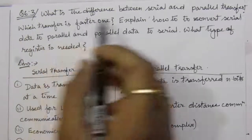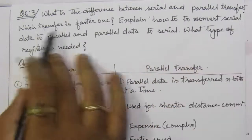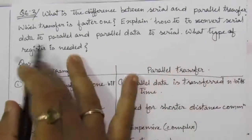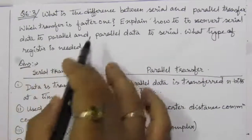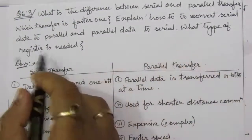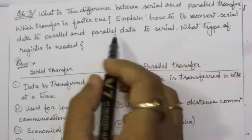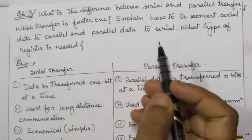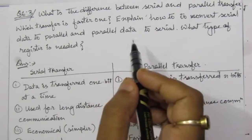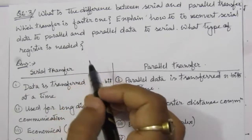The problem is: what is the difference between serial and parallel transfer? Which transfer is faster? Then explain how to convert serial data to parallel and parallel data into serial. What type of register is needed for converting serial data into parallel, and for parallel data to serial, what type of register is needed?